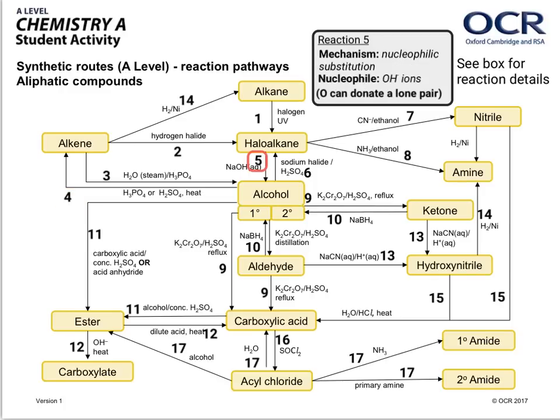Moving on to five, it's a nucleophilic substitution with the nucleophile being an OH⁻ ion. The oxygen has a lone pair that it can donate to a dative covalent bond, in line with the definition for a nucleophile. Moving on to number six, we've got a nucleophilic substitution again — this time the halide ion is the nucleophile, which also has a lone pair that can be donated to a dative covalent bond.